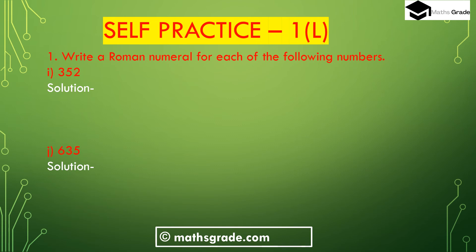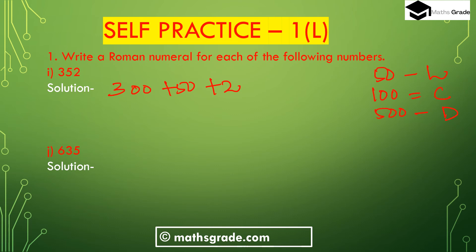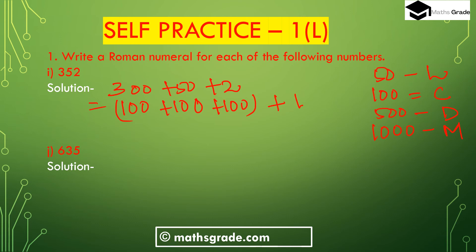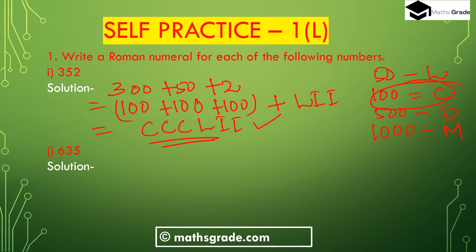Part (i): 352. We write 352 as 300 plus 50 plus 2. The Roman numeral of 100 is C, 500 is D, and 1000 is M. So 300 is CCC, 50 is L, and 2 is II. Combining them gives CCCLII. So the Roman numeral of 352 is CCCLII.